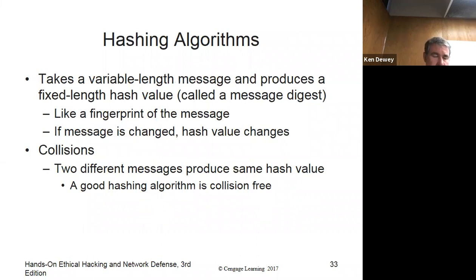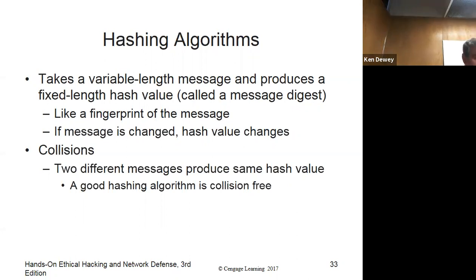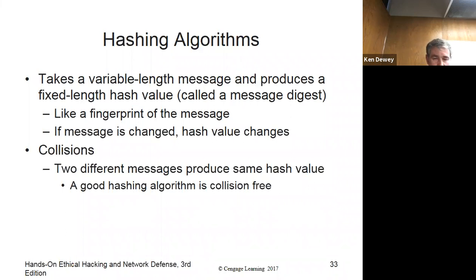Hashing algorithms take a variable-length message and produce a fixed-length hash value called a message digest. It's like a fingerprint — no two messages should produce the same hash value. If the message is changed whatsoever, the hash will not work. If there are two messages that have the same hash value, that's called a collision. MD5 has a known collision, so that's no longer recommended. A collision for an MD5 hash can now be found with just a few machines within a few hours.